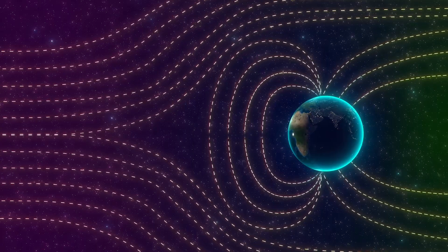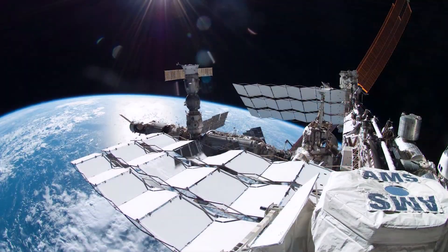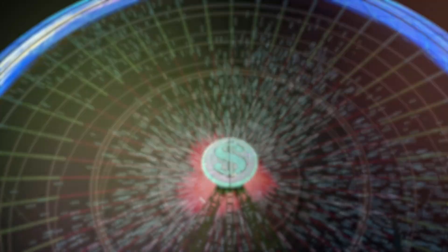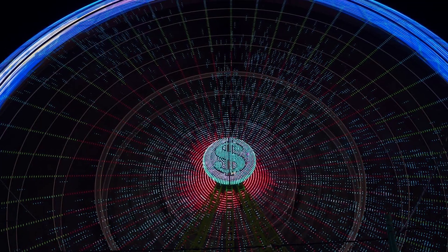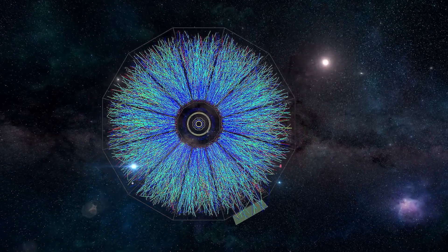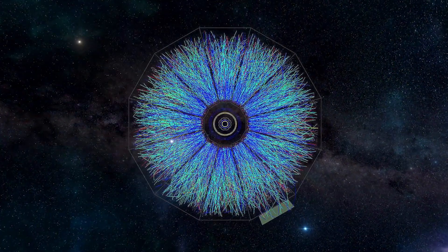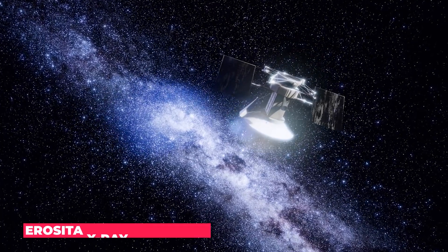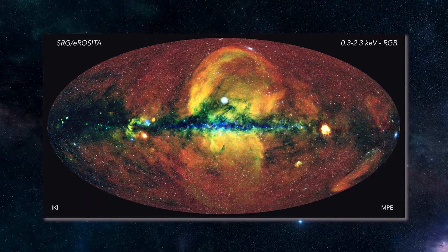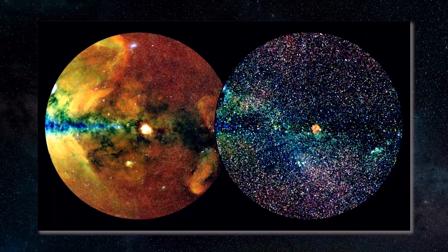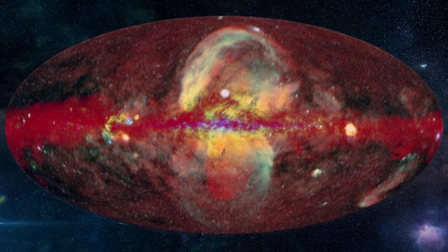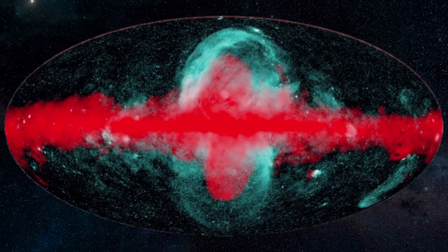In 2021, the AMS-02 detector aboard the ISS logged an unexplained excess of anti-helium nuclei arriving preferentially from galactic south, raising eyebrows about dark matter annihilation below the plane. Meanwhile, the eROSITA X-ray telescope imaged twin bubbles of hot gas above and below the galaxy, cousins to the Fermi structures, but cooler and smaller. These eROSITA bubbles may be another signature of star formation or black hole outbursts.